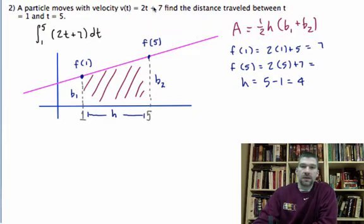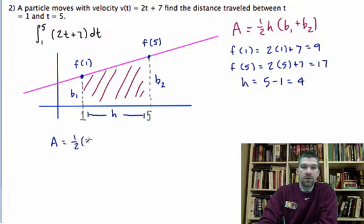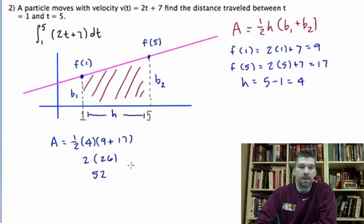This needs to be a 7. Here we go. So that's 9, 10, 17, and 4. So when I set this up, it's going to be A equals 1 half times 4 times 9 plus 17. So 2 times 26, which is 52. And that's the area under the curve for this problem.